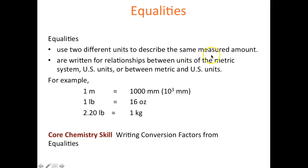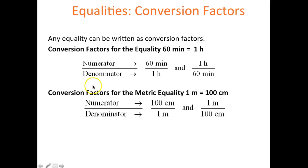Equalities use two different units but describe the same measured amount — for example, one meter is 1000 millimeters, or one pound is 16 ounces. You have a fraction with a numerator and a denominator. The key is to pick the conversion factor where your desired unit is on the numerator so your final answer comes out in the desired unit.